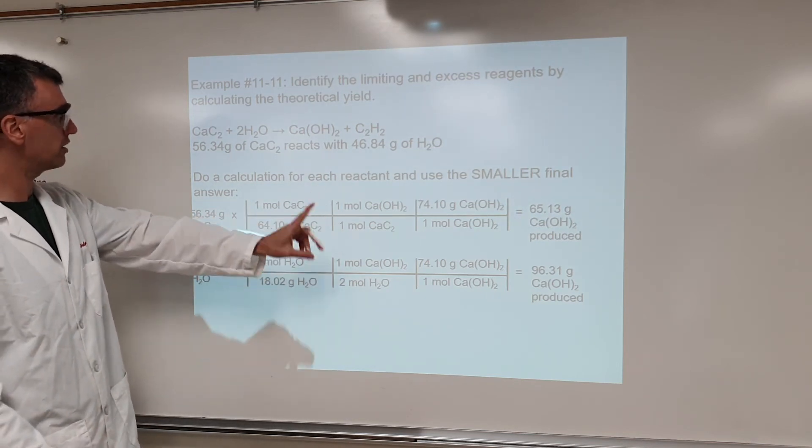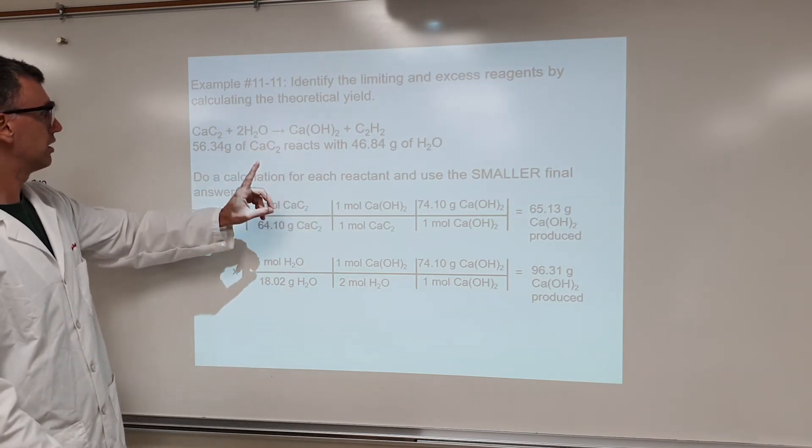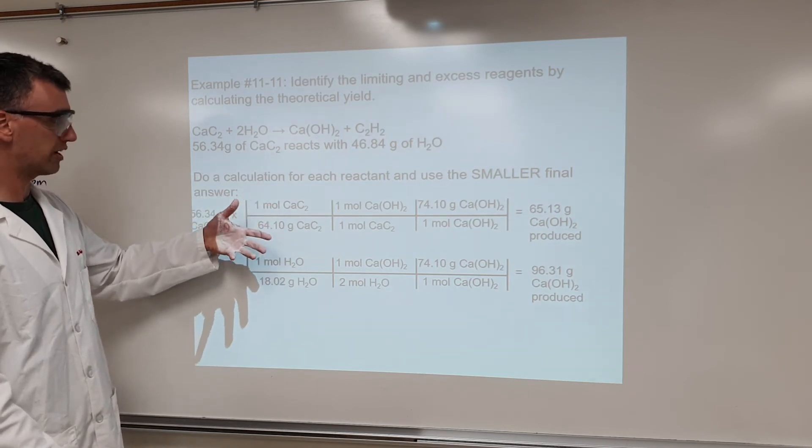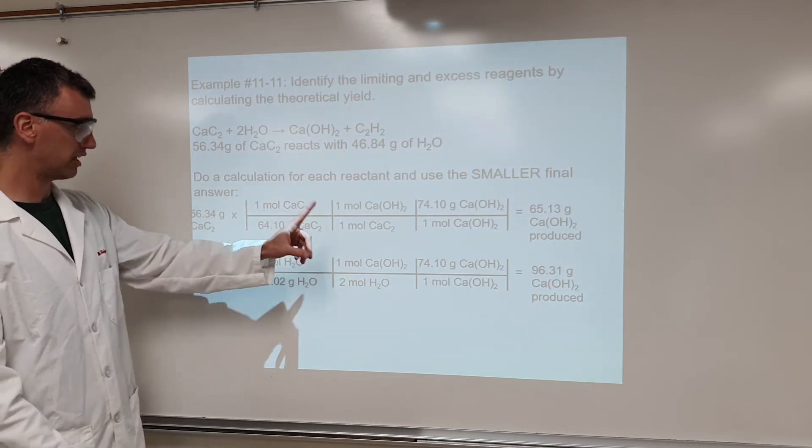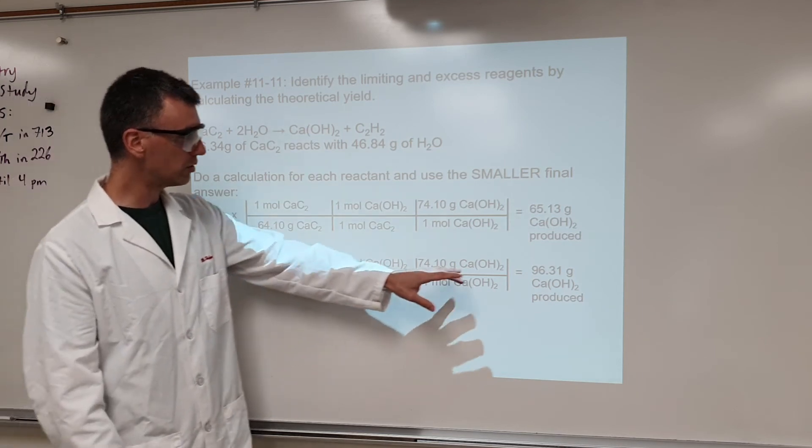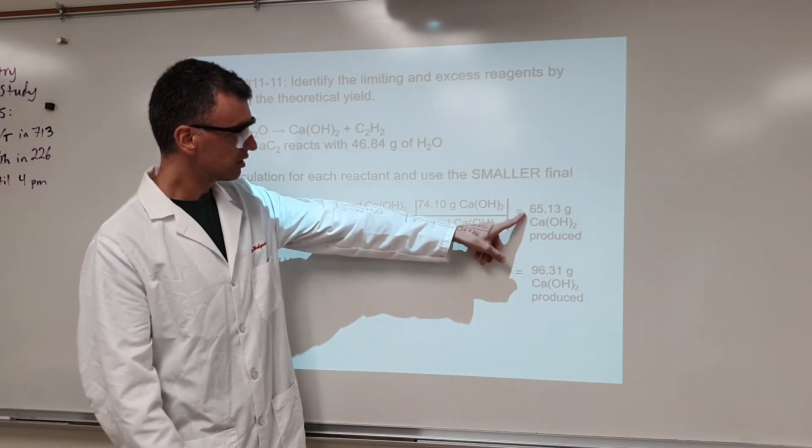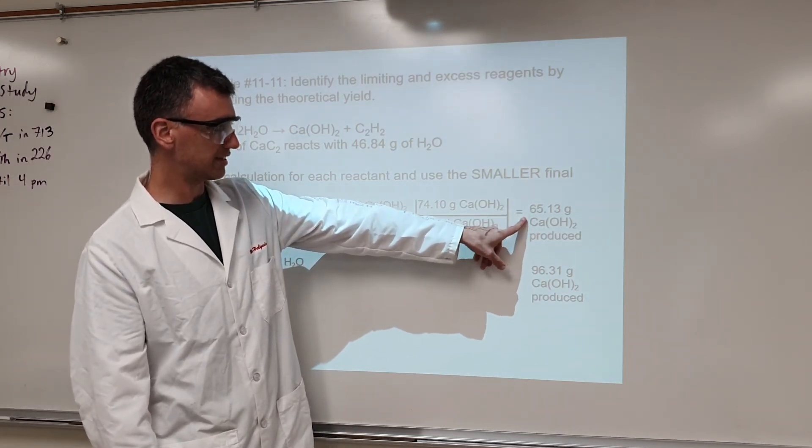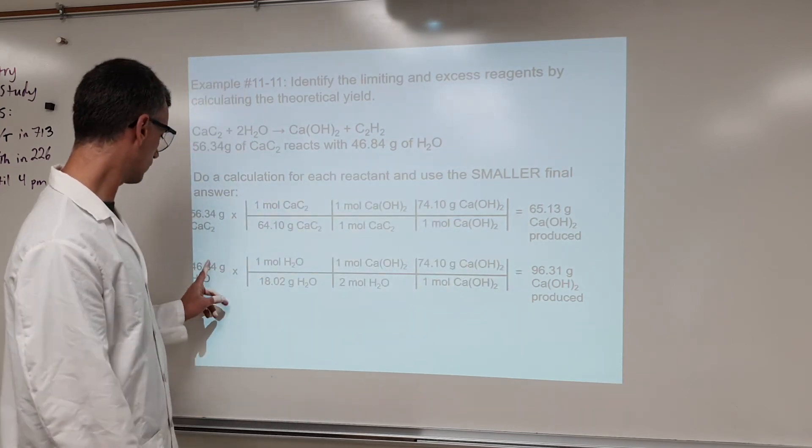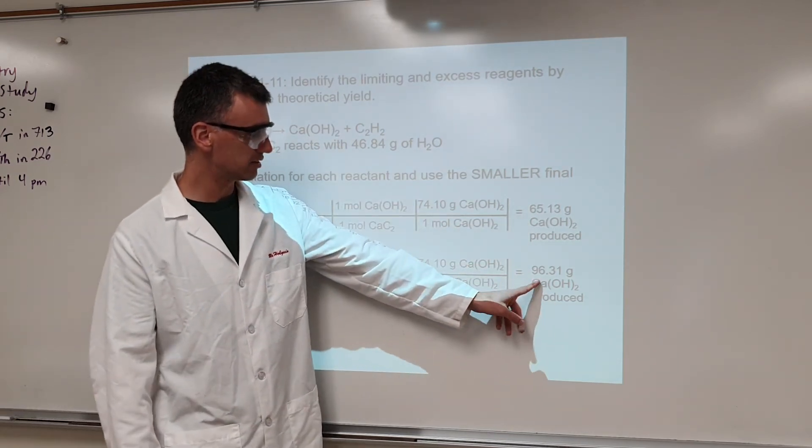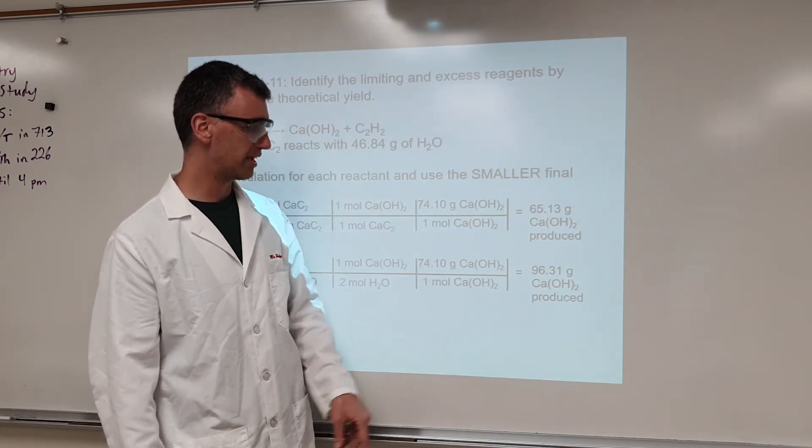because the big picture here is each reactant, if you do the calculation of how much product you're going to make, so you calculate how much of the product here. And you'll notice the limiting reactant, or one of them makes less product, and that is the limiting reactant. One of the reactants is going to make more product, that's the excess reactant.